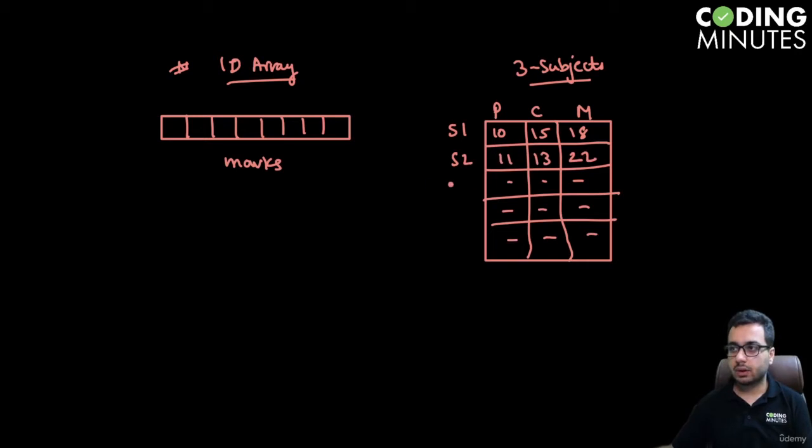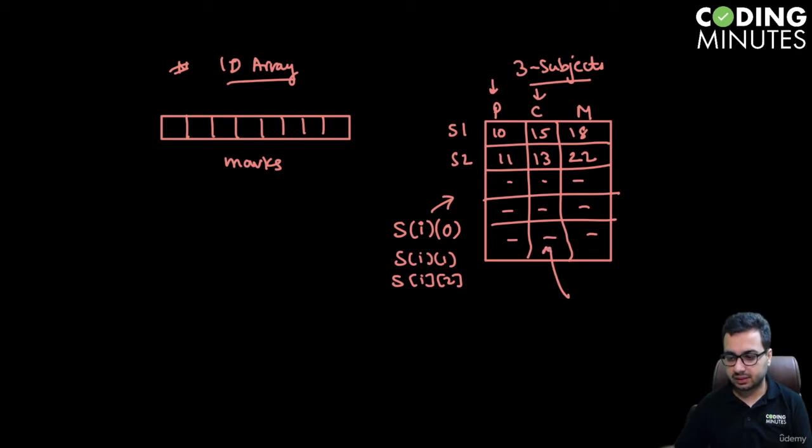If I want to get the marks of the ith student, I can pick the ith row, which represents all the marks of that student. For physics it would be S[i][0], for chemistry S[i][1], and for maths S[i][2]. We can use the square bracket notation to find the particular row and column. For example, the marks would be available at S[x,y].